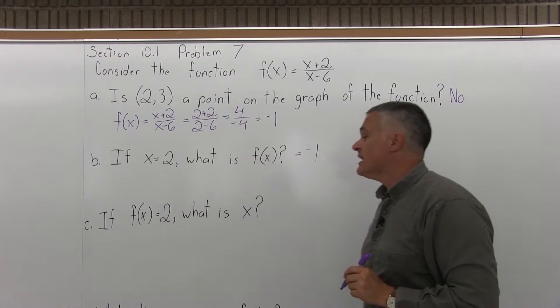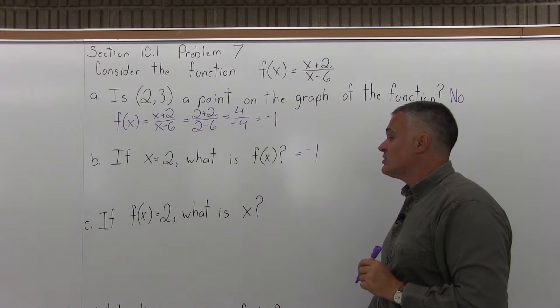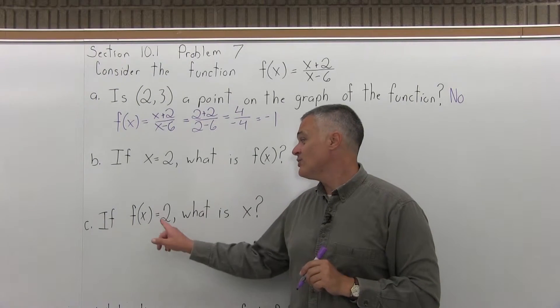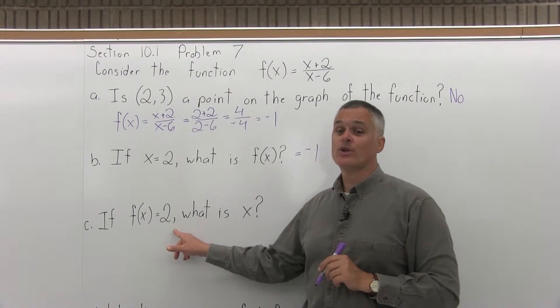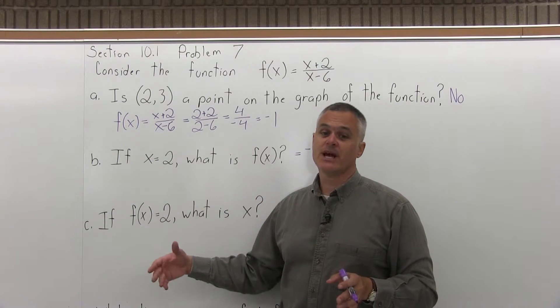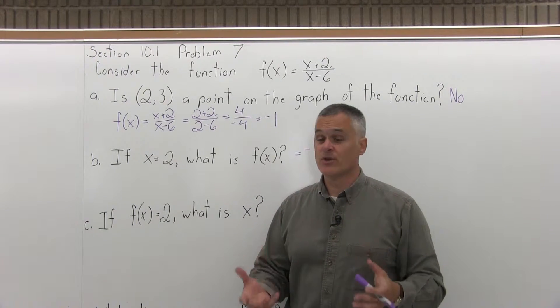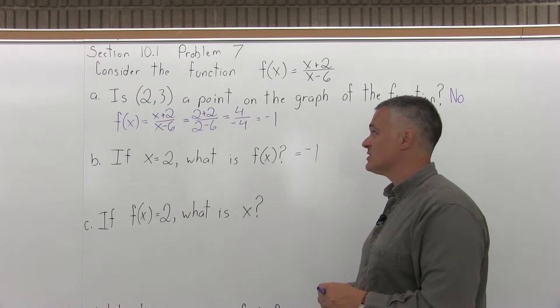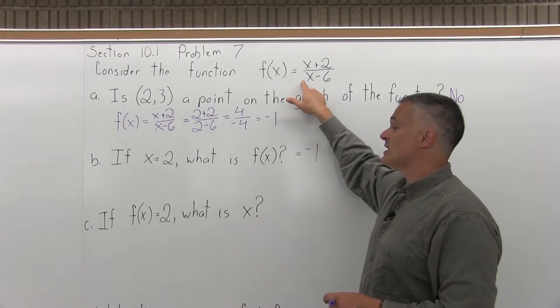Part C says, if f(x) is 2, what is x? Now, this sounds a lot like part B, but it's different. It's asking if you got out a 2, what did you put in? Or you could also say, instead of f(x) is 2, if y is 2, what is x? If the graph were given, you could just look at the graph and read it off, but it's not given. The function is given as an equation.